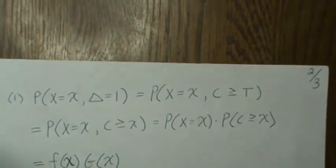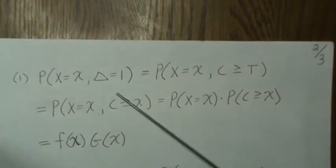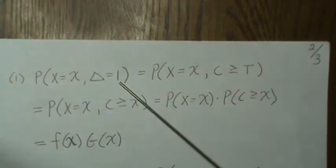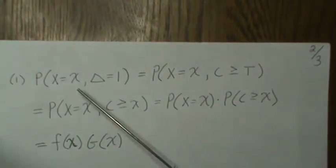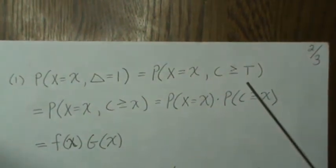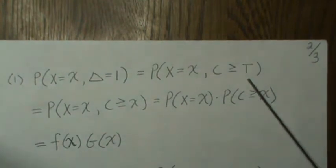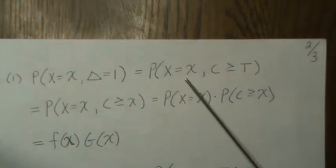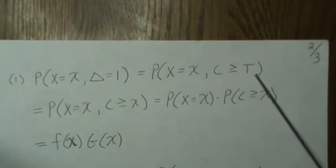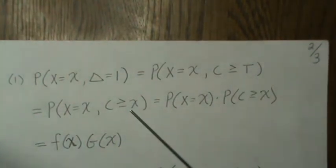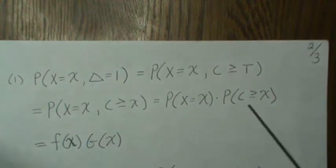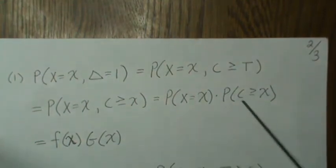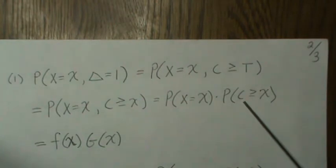So let's take case 1, where delta is 1 — so we observed the failure time. This means that the censoring time is greater than our failure time. And since both of these have to happen, we observed x. Since they're independent, we can break them apart. And then this is just the density for failure times, and this is the survival function for the censoring mechanism.